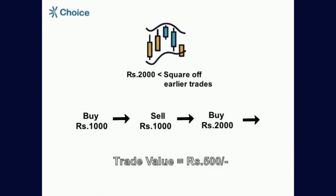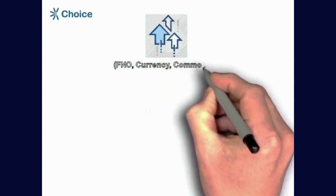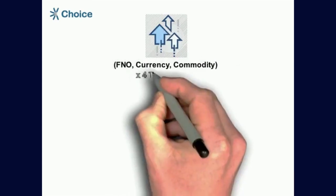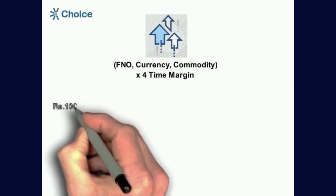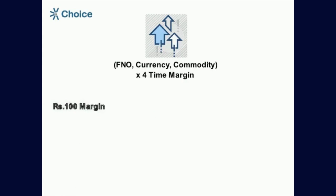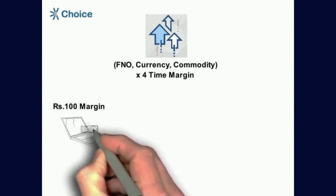Let's take an example for derivatives. In derivatives, F&O, currency, commodity, you can trade maximum up to 4 times of margin available in your account. For example, if you have a margin of Rs.100 in the form of ledger credit or shares pledged or mix of both.